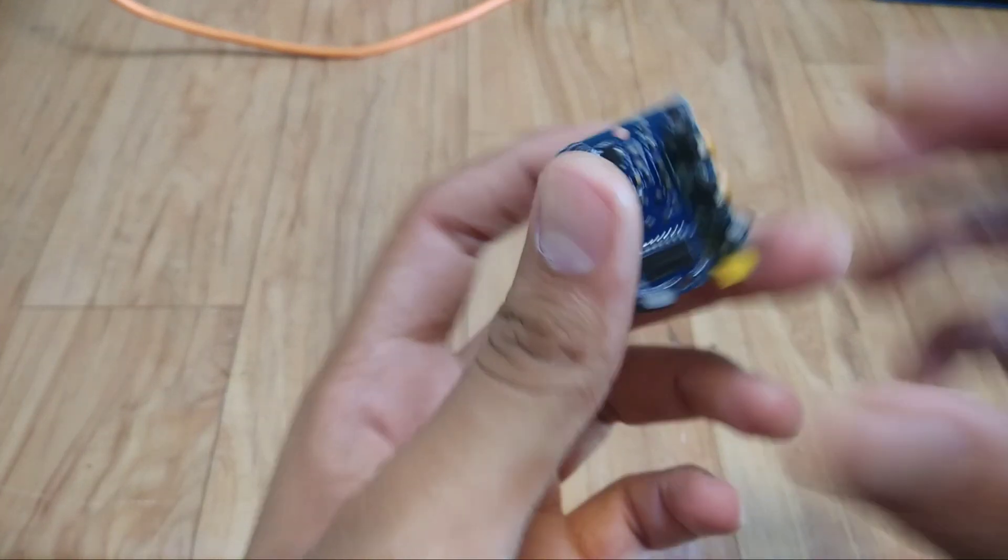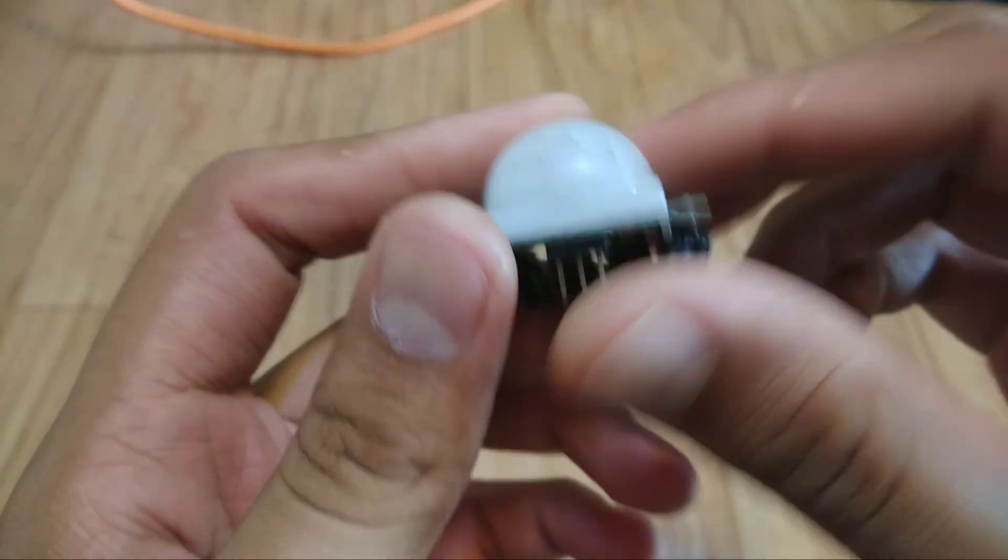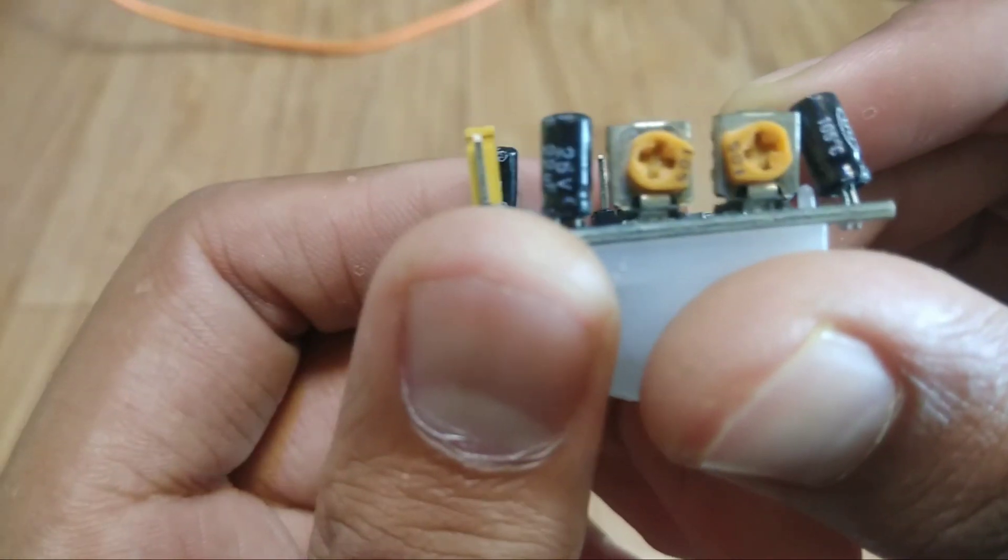Hi, today we will see about PIR sensor. PIR stands for passive infrared sensor. It is also called pyroelectric or IR motion sensor.